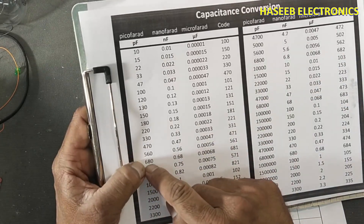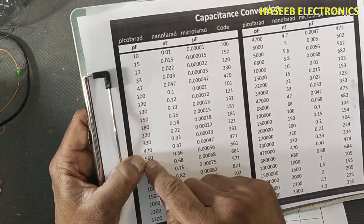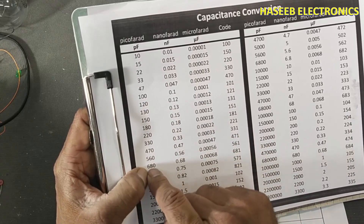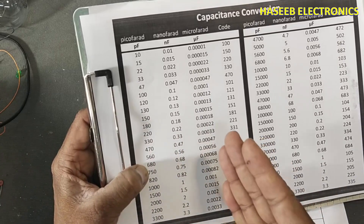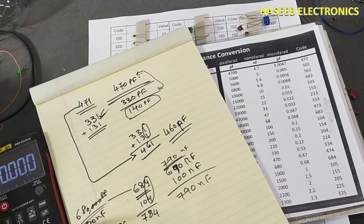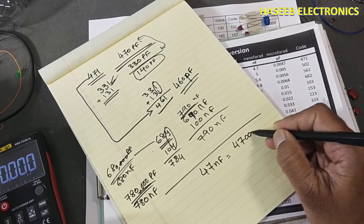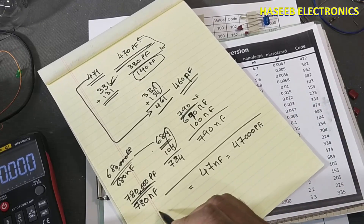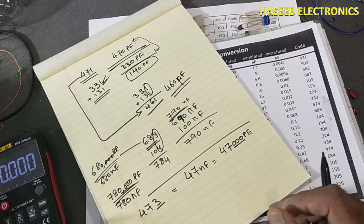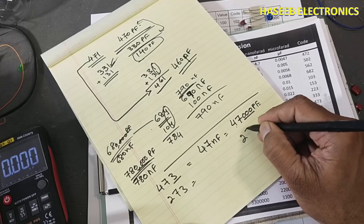For example, if we need 680pF and cannot find it, we can use 560 + 120 = 680pF, connecting in parallel. Let's take another example: if I need 47 nanofarad, that equals 47,000pF and its code is 473. But I don't have this capacitor in the market. However, I have 273 code available, which is 27 nanofarad (27 + 3 zeros = 27,000pF).